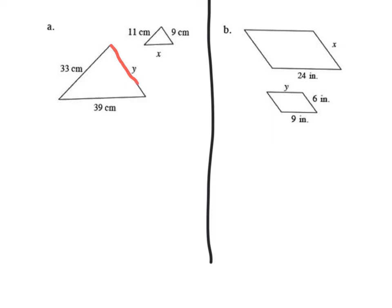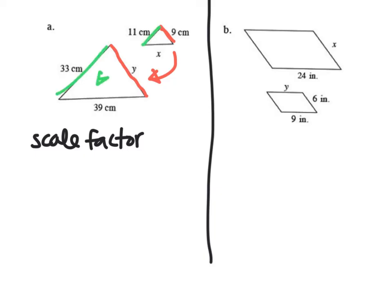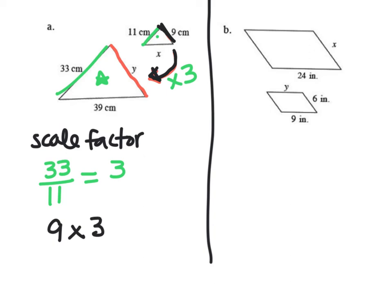Let's find y in this new example. I'm pointing my arrow towards y, and I know it matches up with 9. So 9 times something equals y. First I need to find the scale factor using two sides I do know: 11 and 33. Taking the new side 33 over the original 11 gives 3. So the scale factor is 3 — the large triangle is 3 times bigger. Then 9 times 3 is 27. So y equals 27 centimeters.